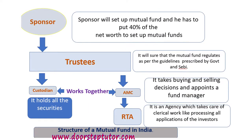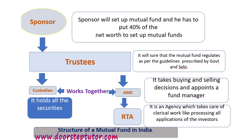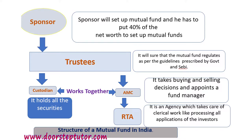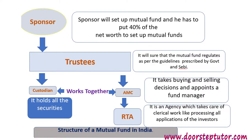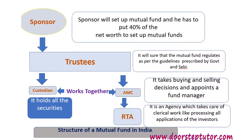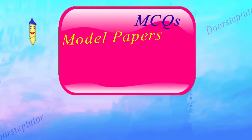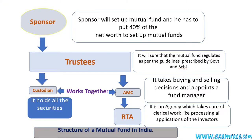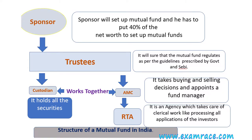Moving further, we have the working structure of mutual funds in India. The participants are: a sponsor, a fiduciary authority named trustees, a custodian, an asset management company, and an RTA. The sponsor sets up the mutual fund and has to put 40% of the net worth to do so. The trustee ensures that the mutual fund operates as per the guidelines prescribed by the government and SEBI. The custodian holds all the securities, whereas the asset management company takes buying and selling decisions and appoints a fund manager. The RTA is an agency which takes care of clerical work like processing all applications of the investors. This is how mutual fund working takes place in India.